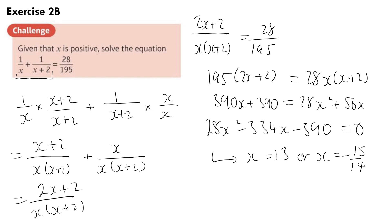And because we're told in the question that x is positive, we can reject x equals minus 15 over 14. Our final answer is x equals 13.